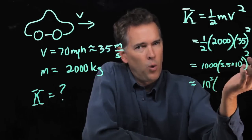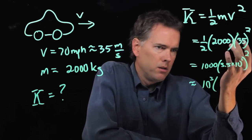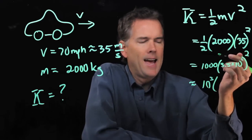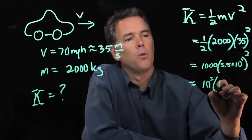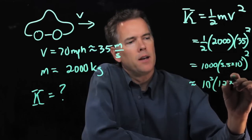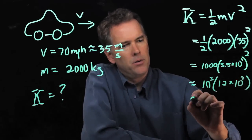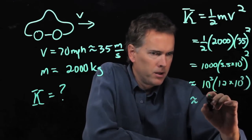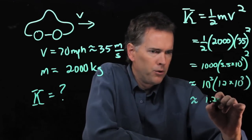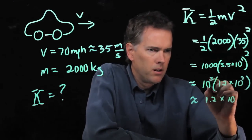3.5 squared, that's got to be pretty close to 10, probably a little bit bigger. Let's say 12. And then 10 to the 1 when we square that becomes 10 to the 2. So I'm gonna say this is approximately 1.2 times 10 to the